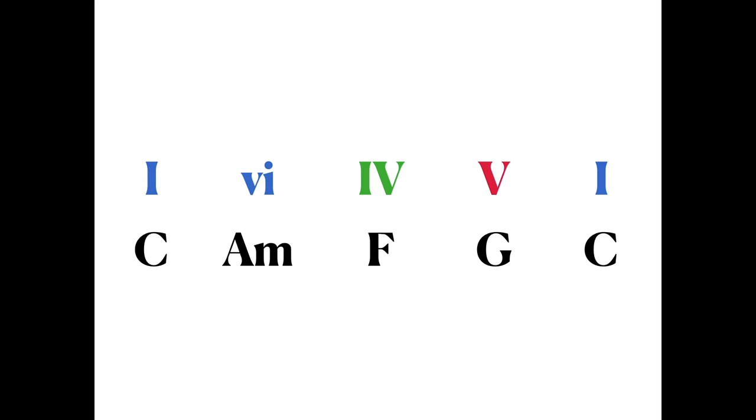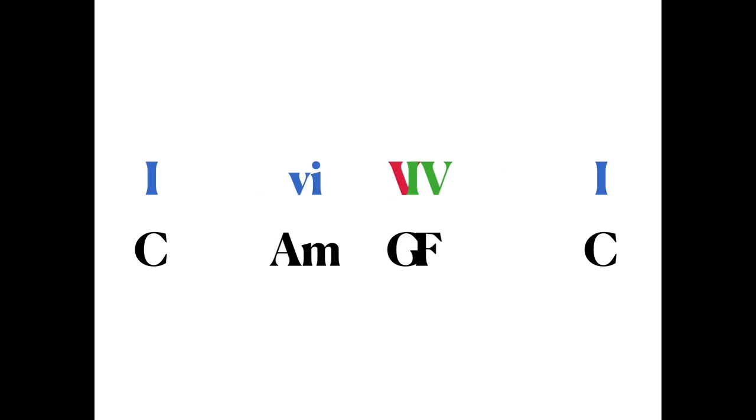So let's look at 1-6-4-5. It has one perfect cadence, but no plagal cadences at all. But if we just rearrange this loop slightly, putting the 5 after the 1 chord, we get a plagal cadence from the F to the C, and another one from C to G.